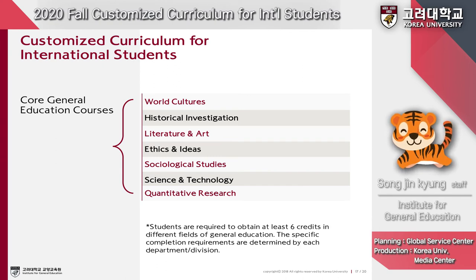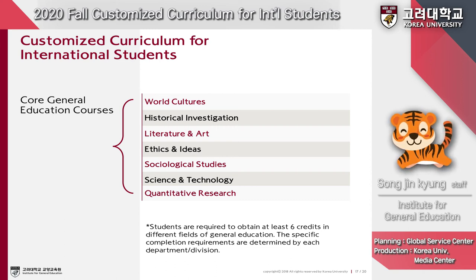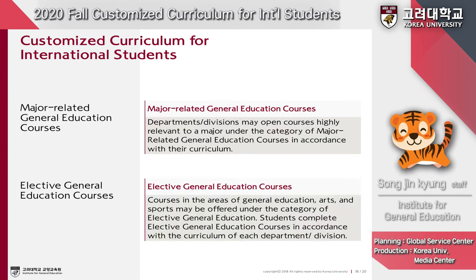Core general education is categorized into seven different areas, with four areas on the upper side belonging to the humanities sub-area. Students need to obtain six credits from core general education courses, and among those six, three credits must come from the humanities sub-area. Requirements may differ by department or division, so you must check the academic curriculum of your own department. Note that students can take a maximum of two core general education courses per semester. Requirements for major-related and elective general education courses may also differ by department, so please check your department's academic curriculum.